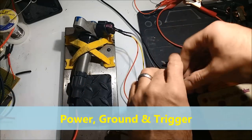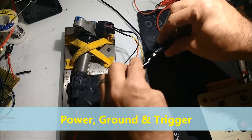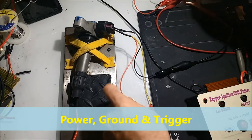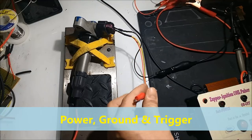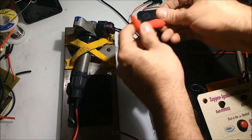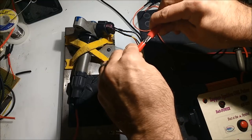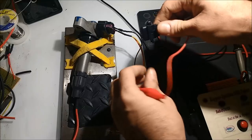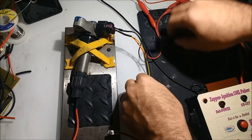As you can see here we have three wires. These coils usually have a power, a ground, and a trigger wire. Some of them have a feedback back to the computer that tells the computer how the spark is being affected.